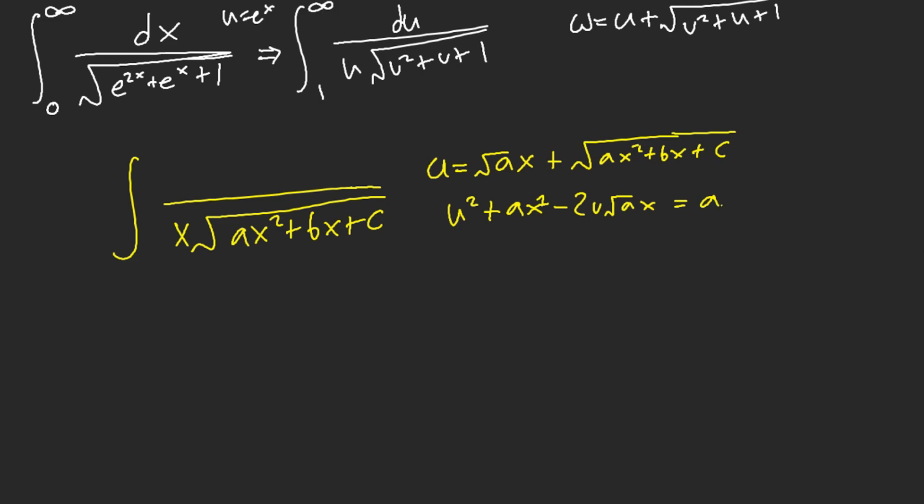Okay, so a x squared plus b x plus c. When u square both sides, this and this cancels out. So that's the whole idea. Don't forget that. Just keep that at the back of your mind.